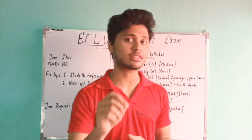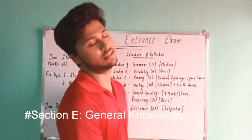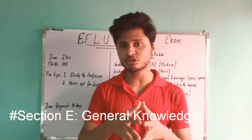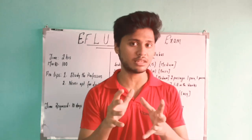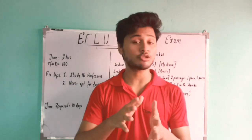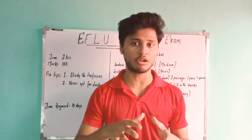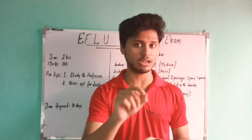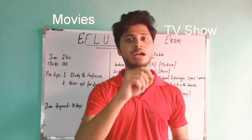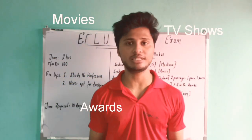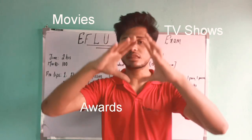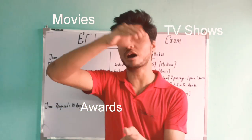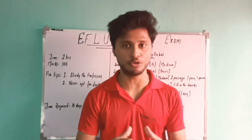Section E is General Knowledge, which many people make a lot of fuss about, but the questions are actually very easy. You do not need to prepare the entire spectrum of GK. All you need is basic knowledge of movies, TV shows, and awards — these three areas cover around seven out of ten questions. If you have a basic idea of what happened in these three areas over the past one year, you are already good to go.